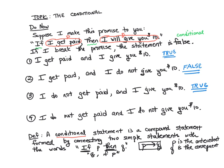Finally, this scenario: I don't get paid and I don't give you $10. You're wondering why I didn't give you the $10. Well, I didn't get paid, so I didn't have the money to pay you. And I did say that if I get paid I'll give you the $10. So in this scenario, even though you didn't get the $10, you wouldn't be upset with me because I did not get paid. The promise isn't broken, and this is true.